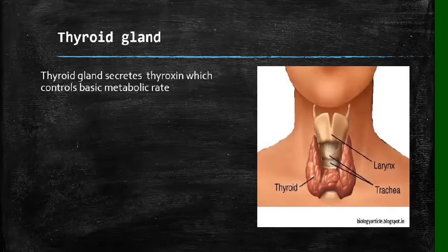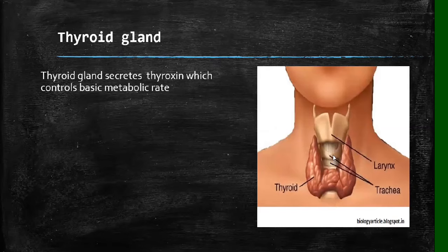Our next gland is the thyroid gland. As you can see on the diagram, the thyroid gland is located below our larynx and is attached to our trachea. The thyroid gland secretes thyroxine, which controls the metabolic rate — it controls metabolism in our bodies.